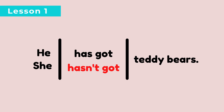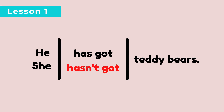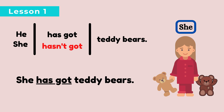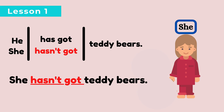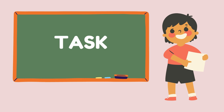Has got and hasn't got: he and she, we must use has got or hasn't got. For example, she has got teddy bears. Now, there are no teddy bears, so it should be she hasn't got teddy bears. Second point for lesson 1, you must remember: have got and has got bermaksud mempunyai; haven't got and hasn't got bermaksud tidak mempunyai.